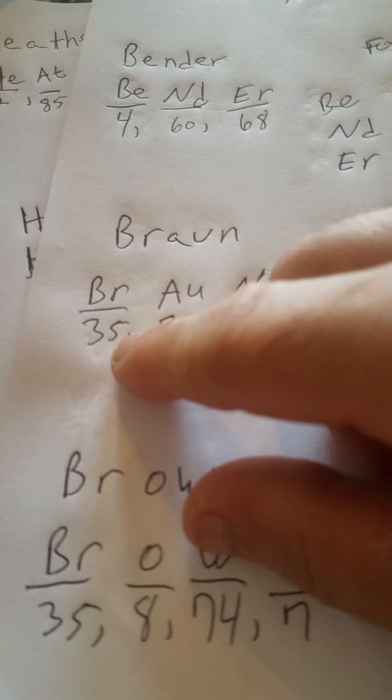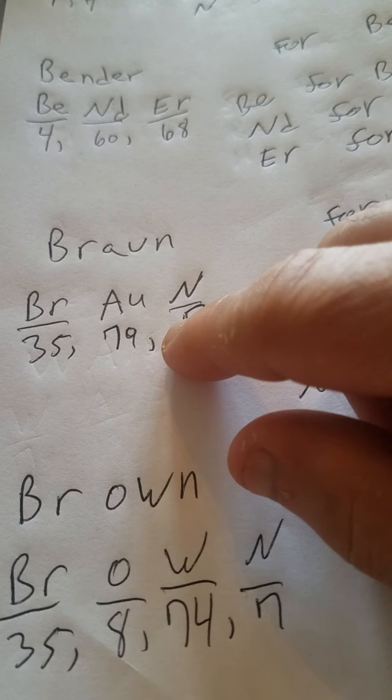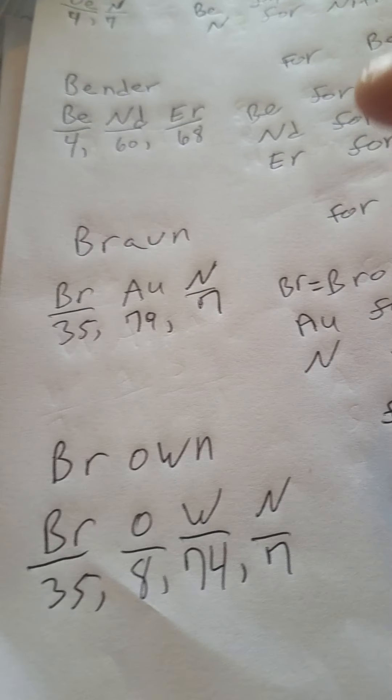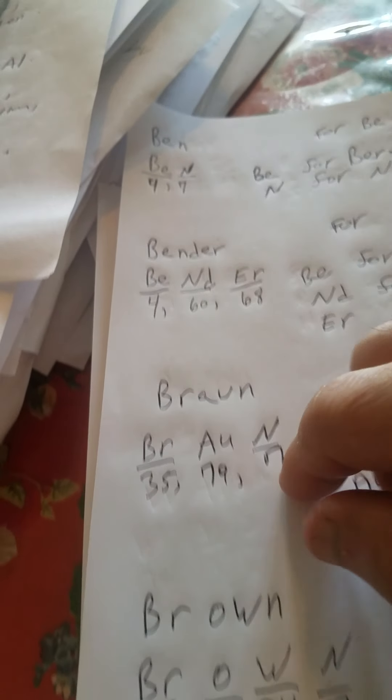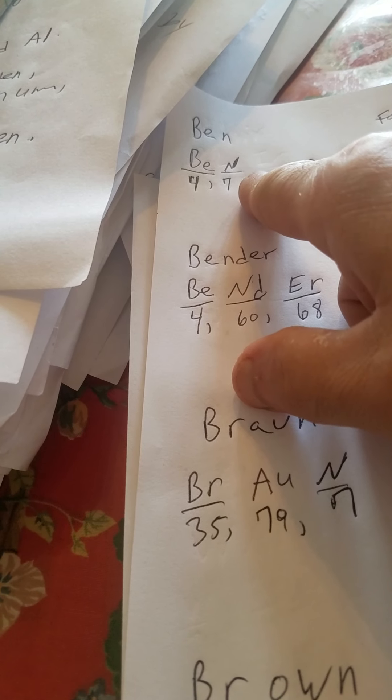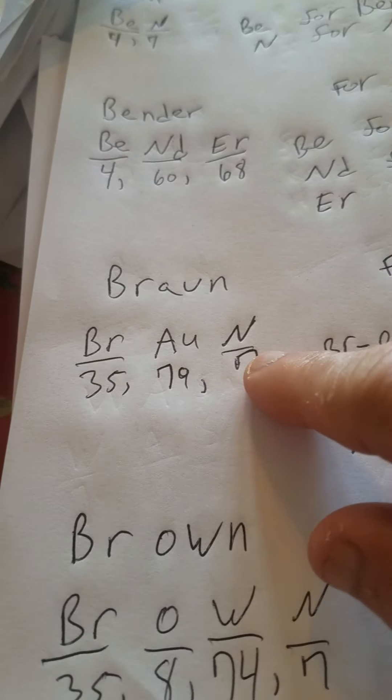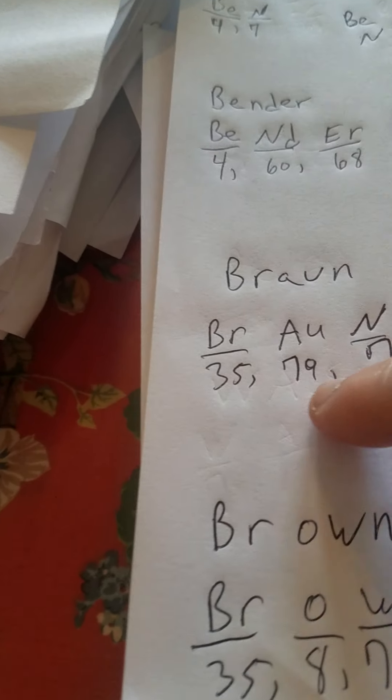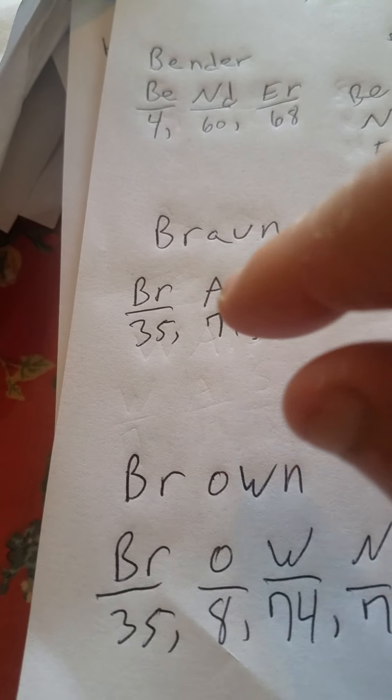And capital N, atomic number seven for nitrogen, as we had up here for Ben. See that four and seven? Here we got seven for nitrogen, we got 79 for gold capital A-U, and capital Br for bromine, atomic number 35, which is a liquid at room temperature.